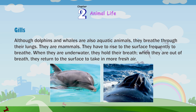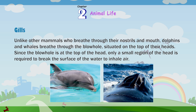Although dolphins and whales are also aquatic animals, they breathe through their lungs — they are mammals. They have to rise to the surface frequently to breathe. When they are underwater, they hold their breath, and when they are out of breath, they return to the surface to take in more fresh air. Unlike other mammals who breathe through their nostril and mouth, dolphins and whales breathe through their blowhole, situated on the top of their heads. Since the blowhole is at the top of the head, only a small region of the head is required to break the surface of the water to inhale air.